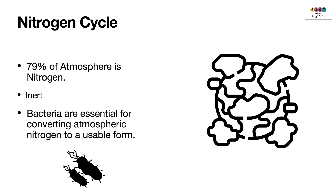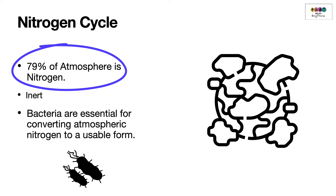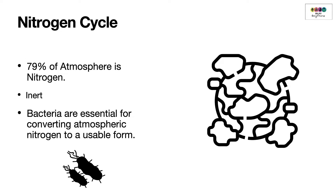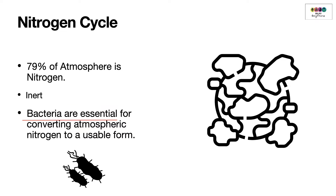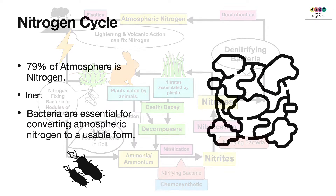There's quite a lot of nitrogen in our atmosphere — approximately 79% — but it's in an unreactive, inert form that we can't really use. So bacteria are essential for converting atmospheric nitrogen into a usable form.